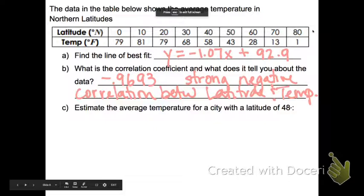Now it says, estimate the average temperature for a city with a latitude of 48 degrees. So remember, the latitude was the x and the temperature was our y. So it's basically telling me, what is y if x equals 48?